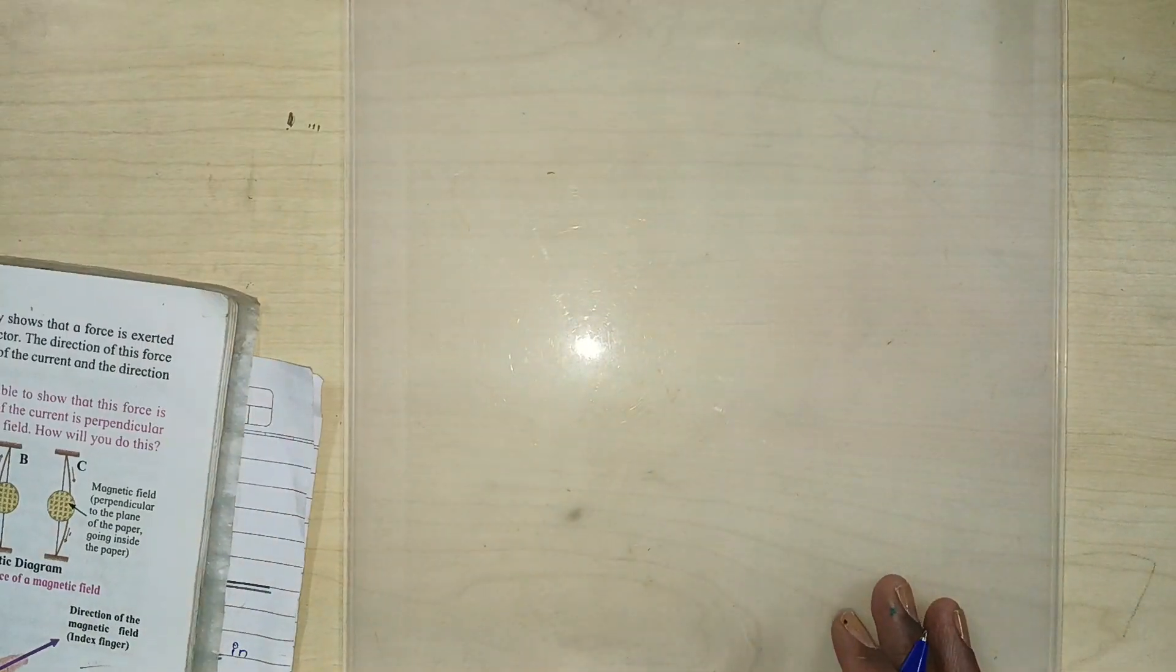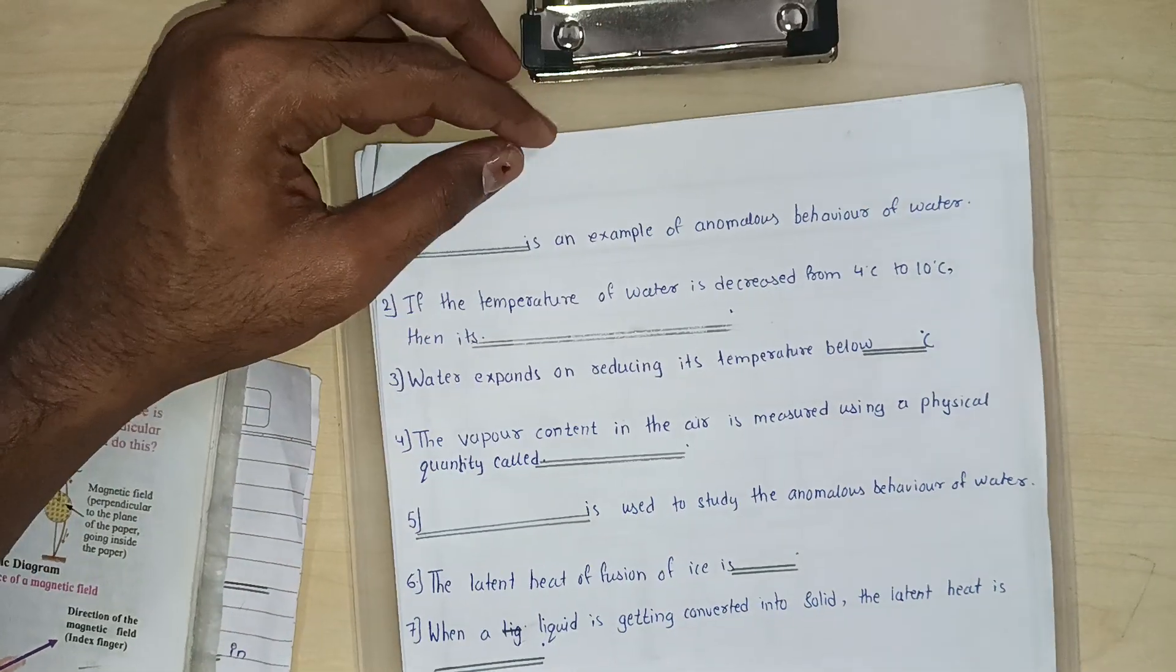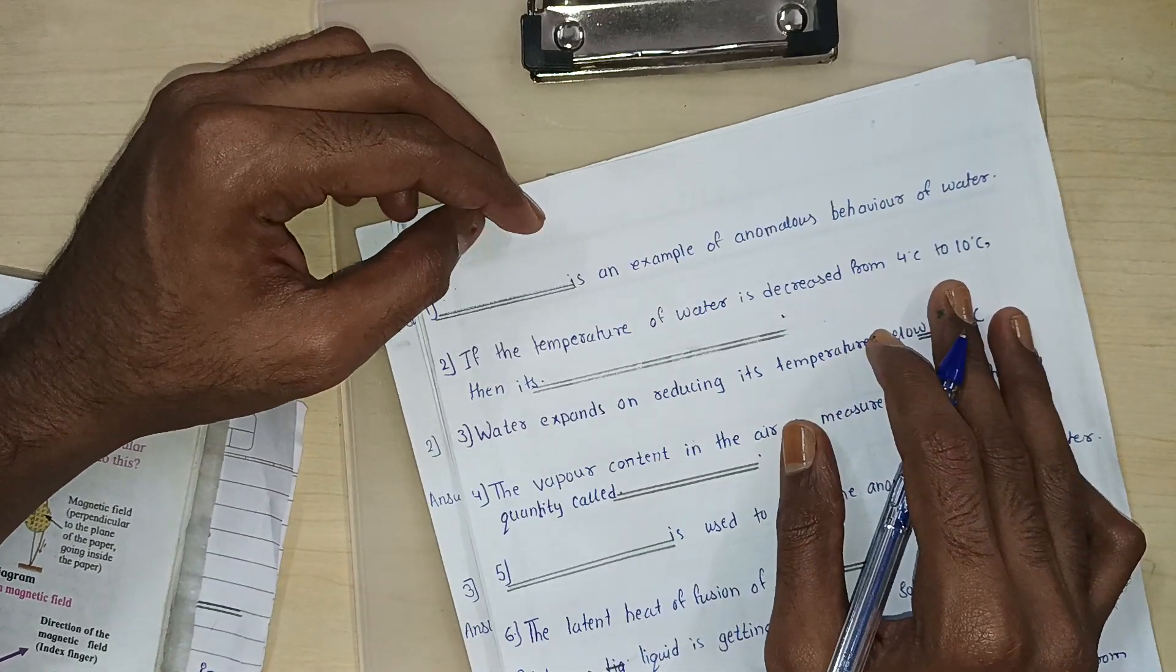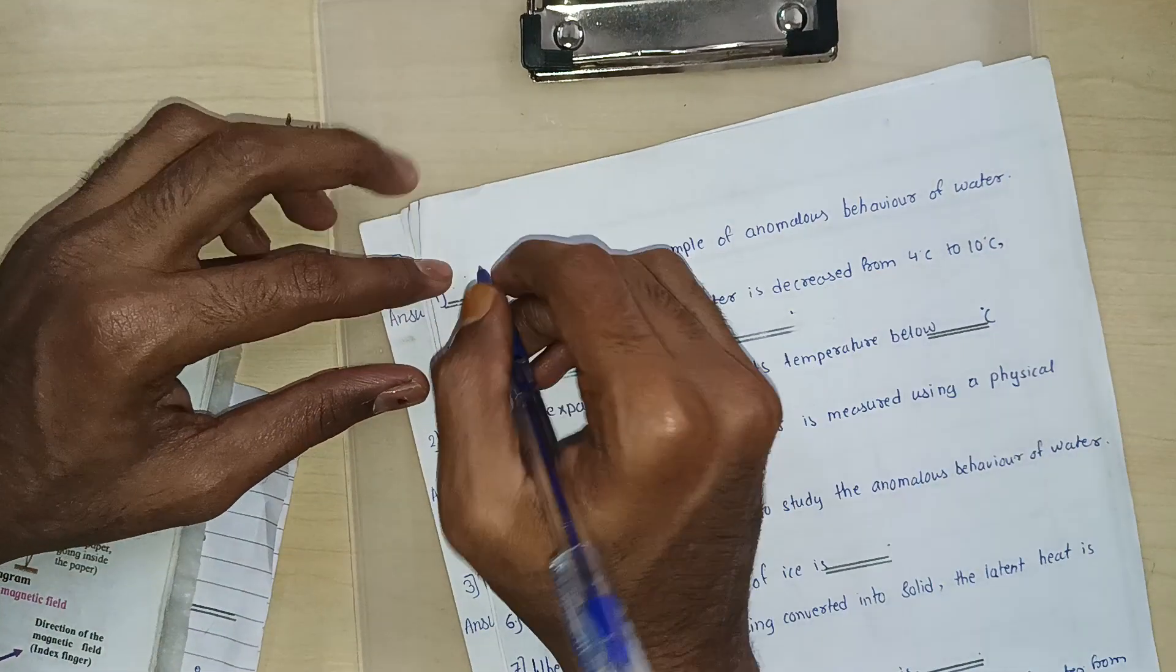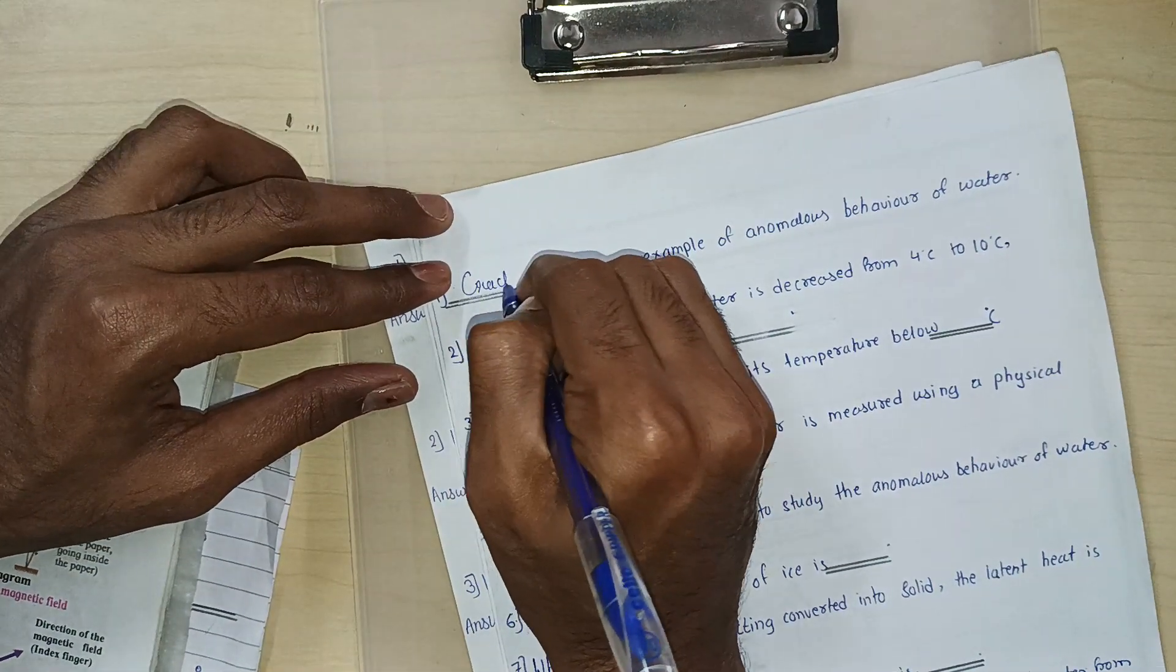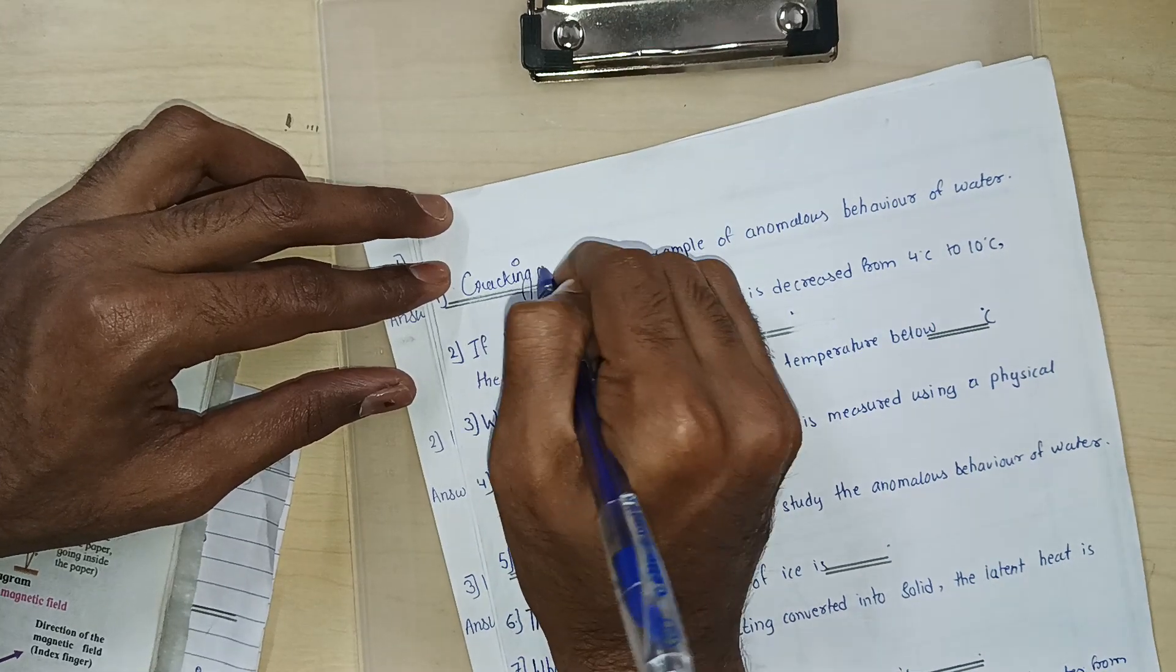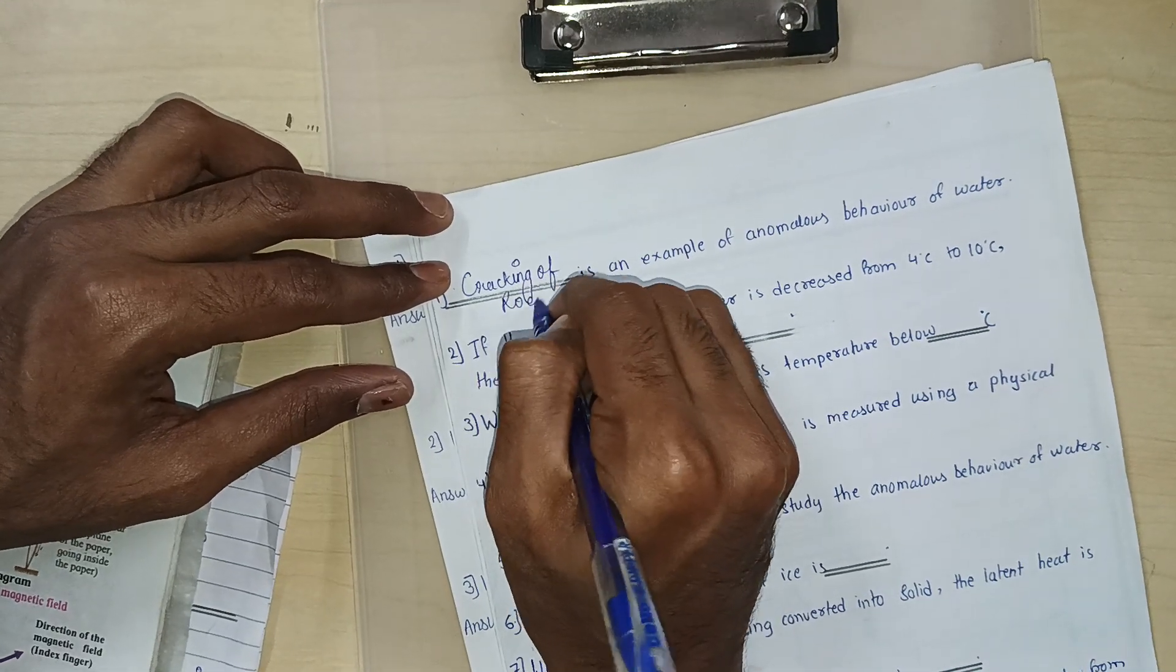Now next chapter that we have is chapter number 5. In chapter number 5 we have got first question. Dash is an example of anomalous behavior of water. What is the answer? Cracking of rocks.